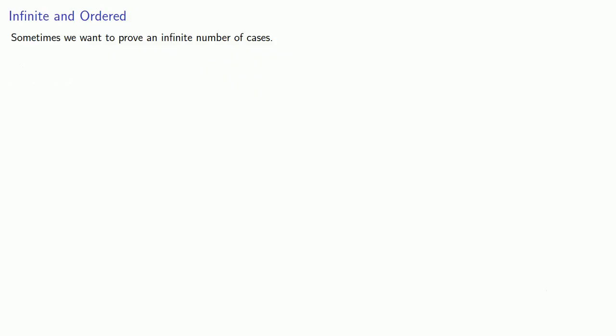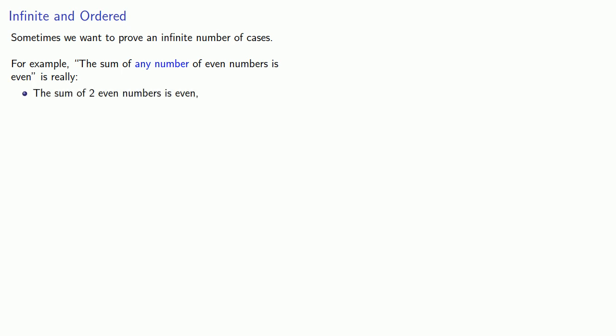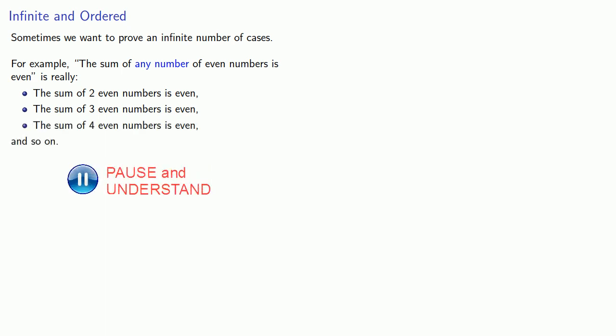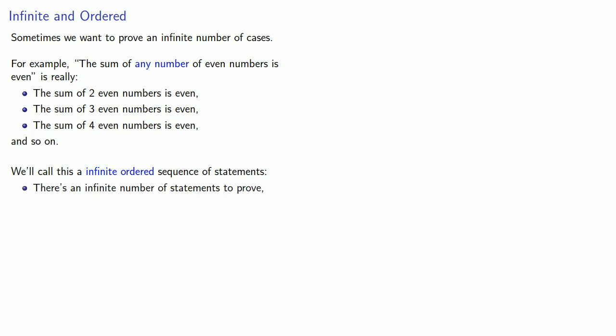Sometimes we want to prove an infinite number of cases. For example, the sum of any number of even numbers is even — this is really the sum of two even numbers is even, the sum of three even numbers is even, the sum of four even numbers is even, and so on. We'll call this an infinite ordered sequence of statements. There's an infinite number of statements to prove, but there's an orderly way to list all of them.